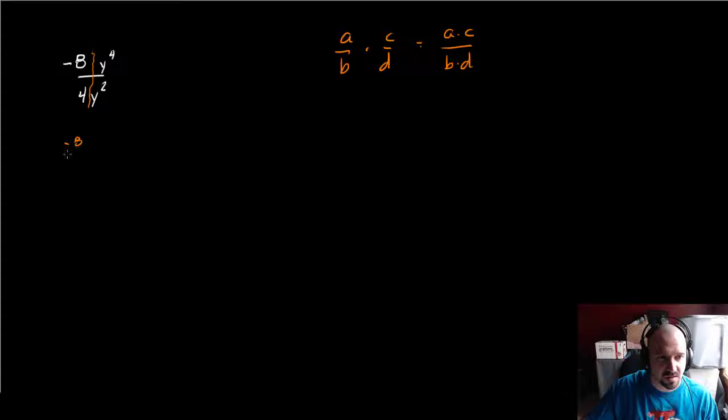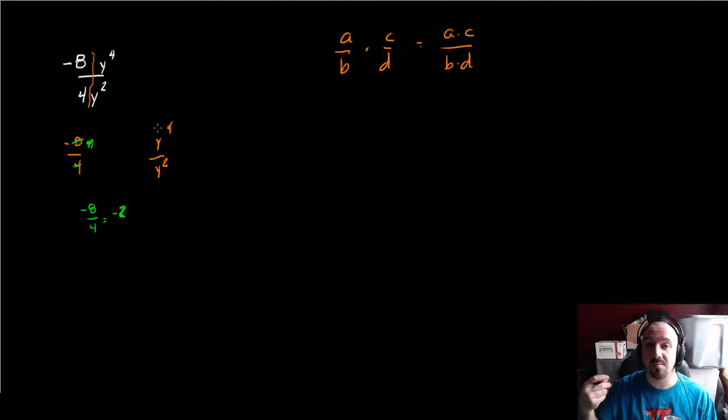So we really have negative eight over four, and then we have this y to the fourth over y squared. So negative eight over four is going to be a negative four, but it's going to be on the top. Whoa, whoa, whoa. Maybe we should try actually answering the question correctly. Negative eight over four is negative two. But because there were more on top than on bottom, then the two is going to be on top. So over here, with the four y's and the two y's, for each y on top and bottom, they cancel one another out and make one.